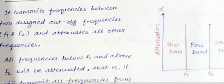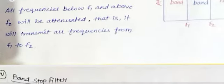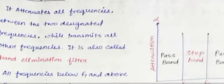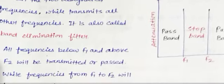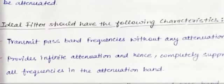For the band pass filter, it transmits signals between frequencies F1 and F2. The frequencies between F1 and F2 will pass, and the others outside this range will stop. For the band stop filter, the frequencies between F1 and F2 are stopped and all others pass.